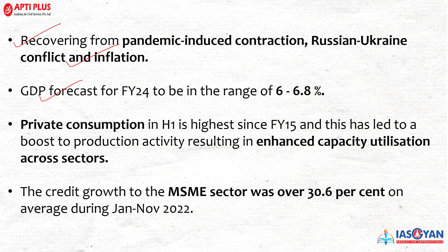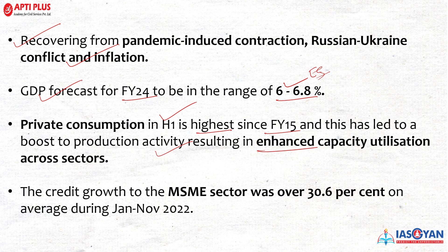The GDP forecast for 2023-24 has been projected in the range of 6 to 6.8%. Private consumption for H1, the first half of the year, was the highest since financial year 2015. This has led to boosted production activity, resulting in enhanced capacity utilization across sectors. The credit growth of the MSME sector was over 30.6% on average during January to November 2022 — commendably well compared to other years.